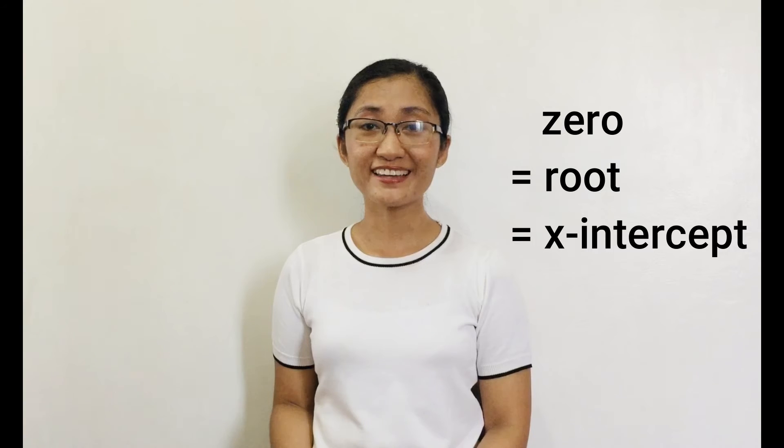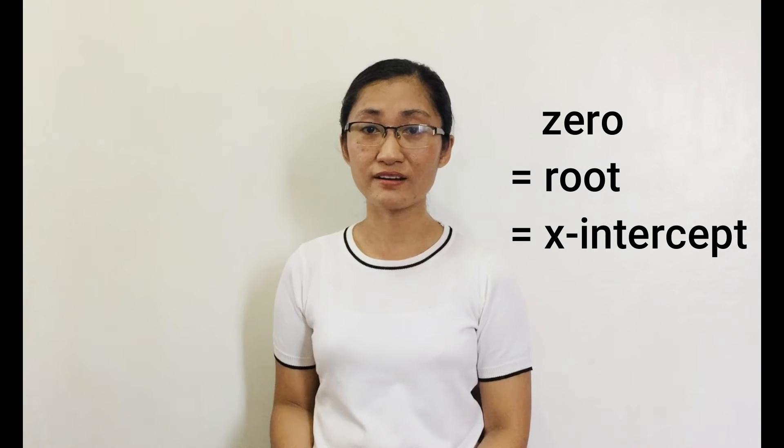Given any function, its zeros are the values of the function which make the function equal to zero. Actually, zero, root, and x-intercept are similar. How is it done given a rational function?